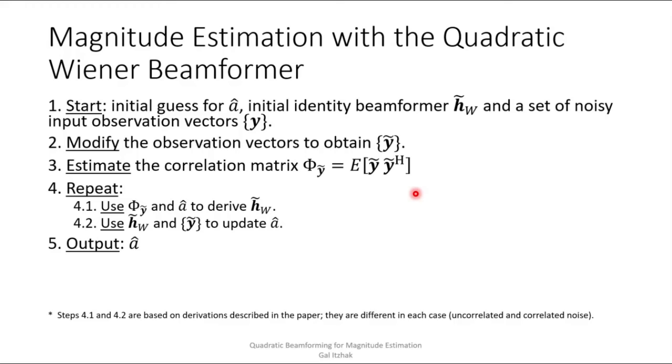Then we repeat several times the following process. We use the correlation metrics and the latest estimate of A to derive the quadratic Wiener, and then we use the quadratic Wiener and the set of modified observations to update our estimate of A. And then clearly the output of this algorithm is the estimate of A. And it should be noted that convergence of this algorithm is guaranteed due to the convex nature of the problem.